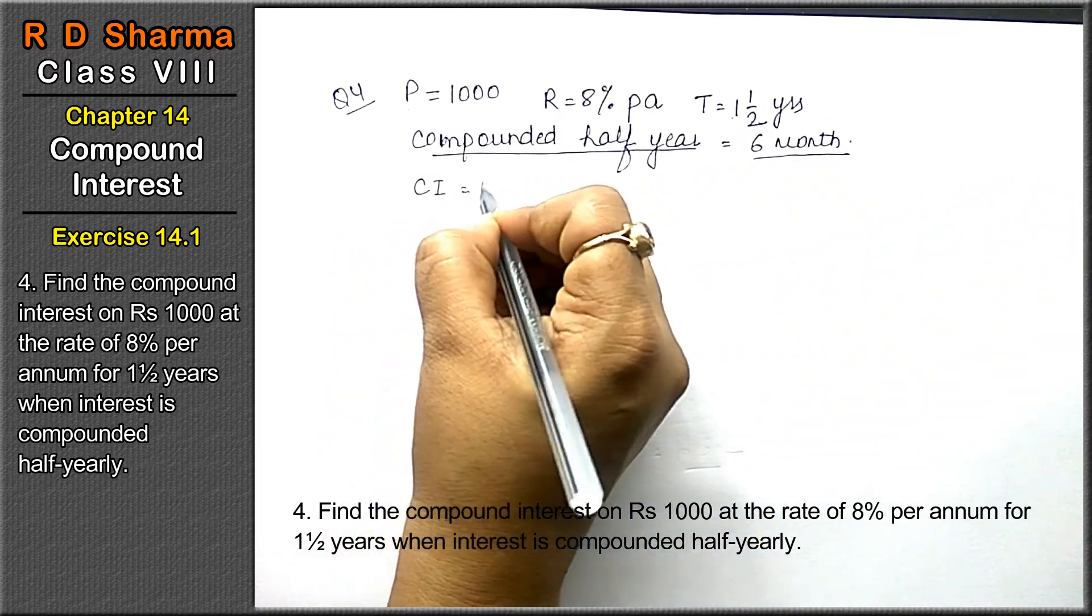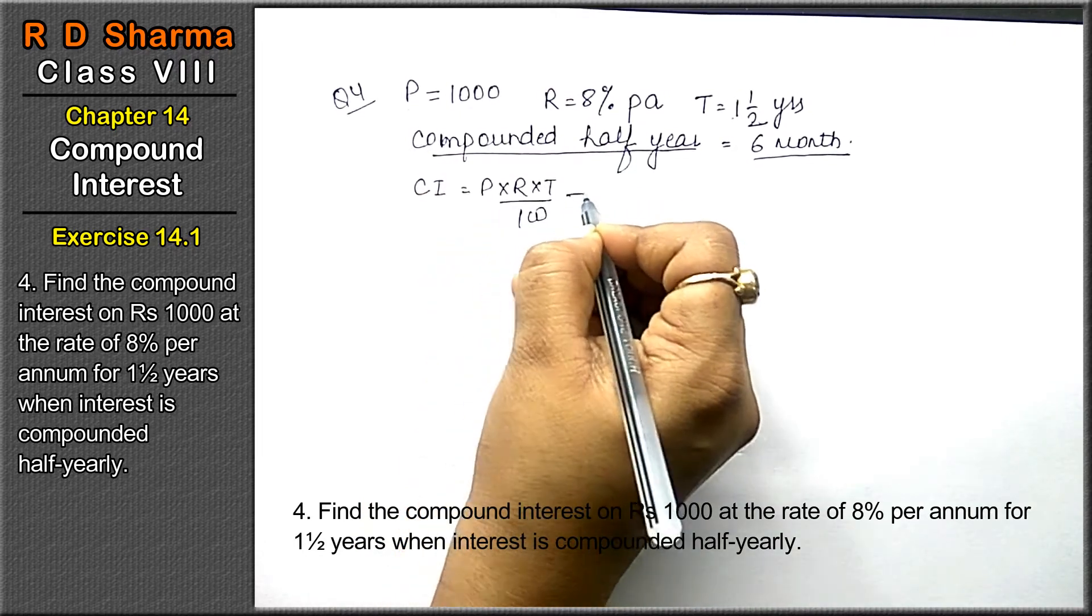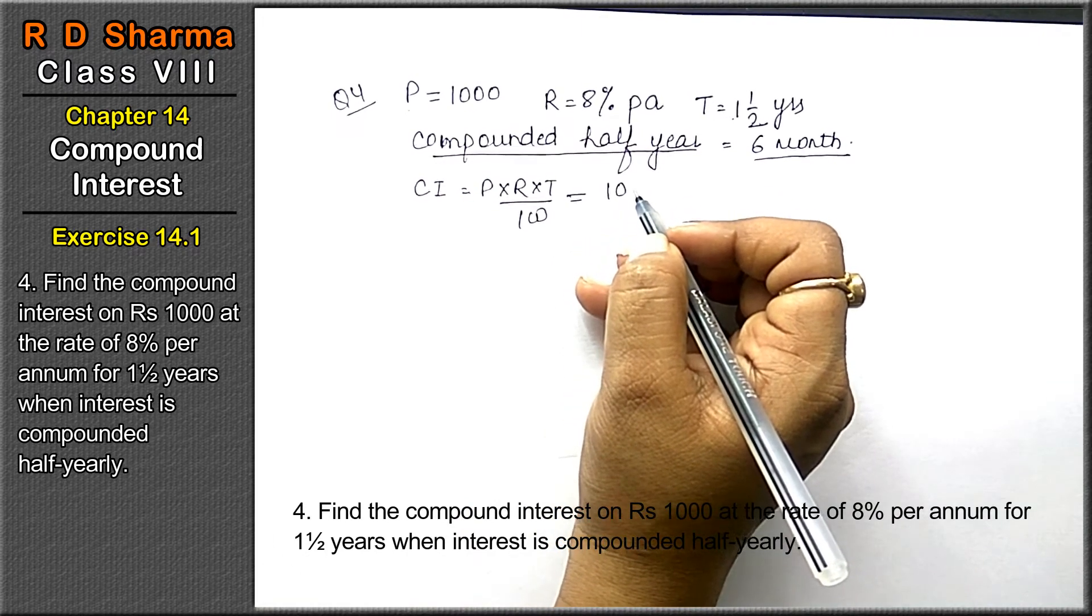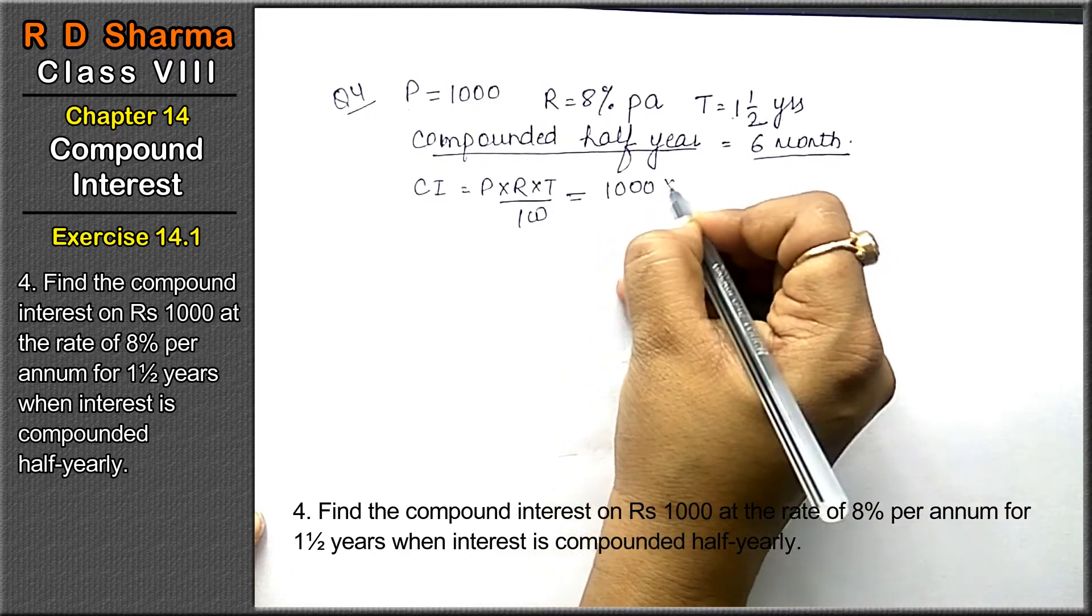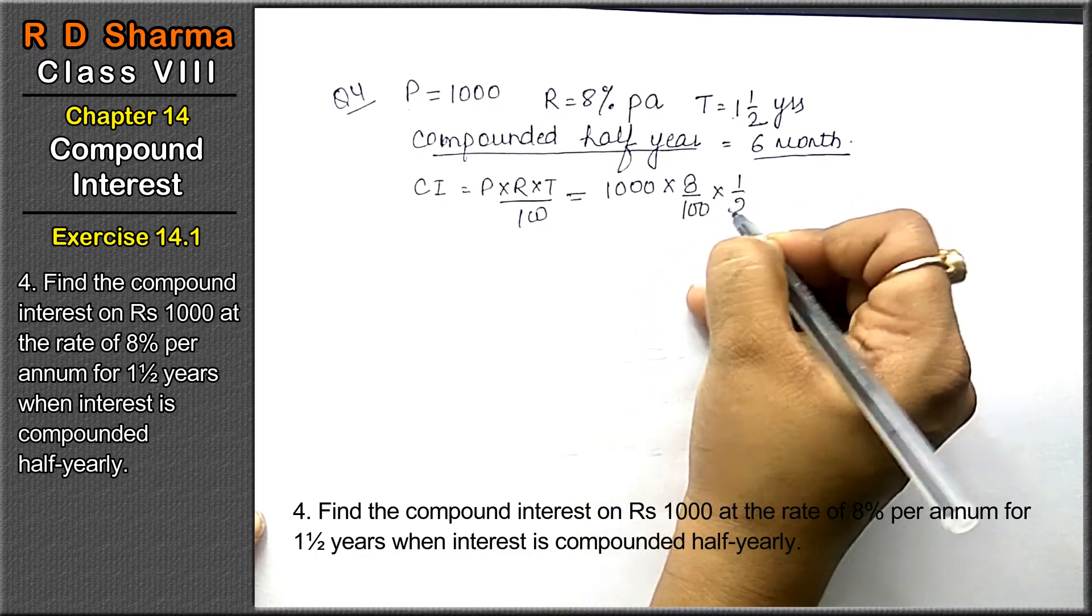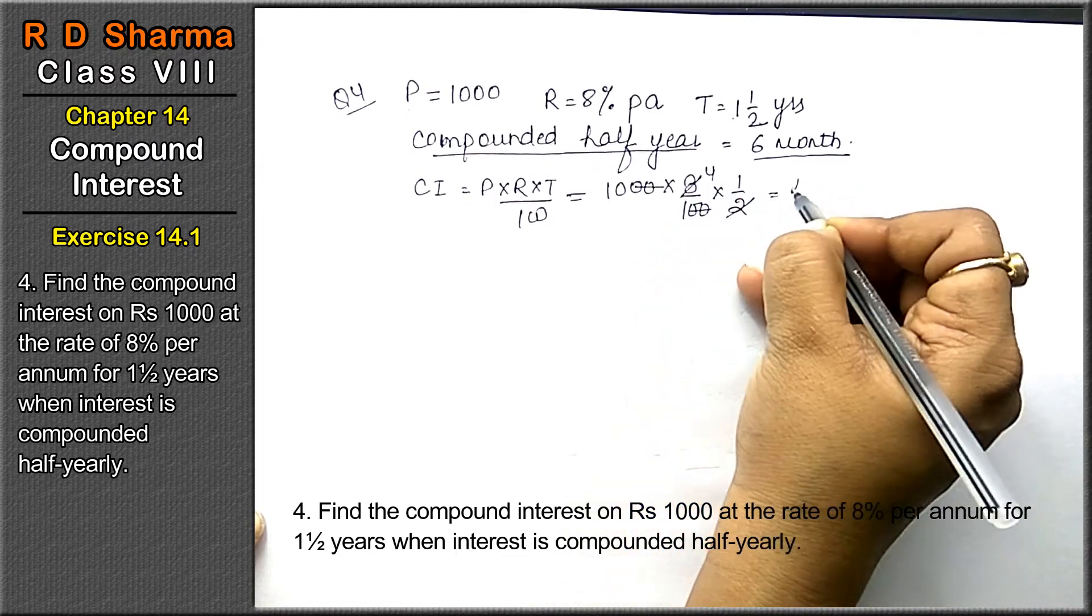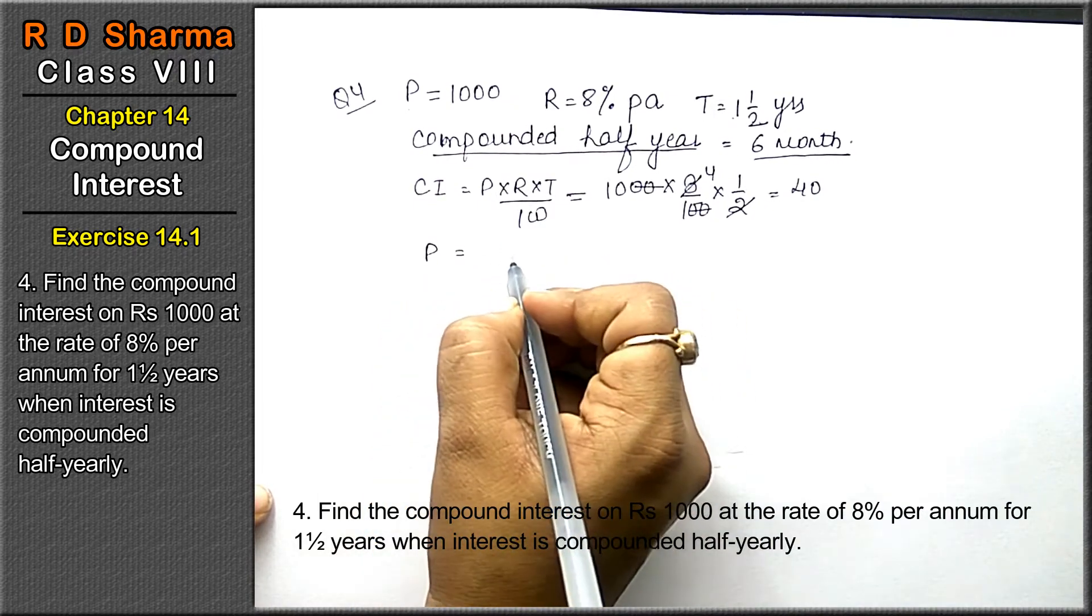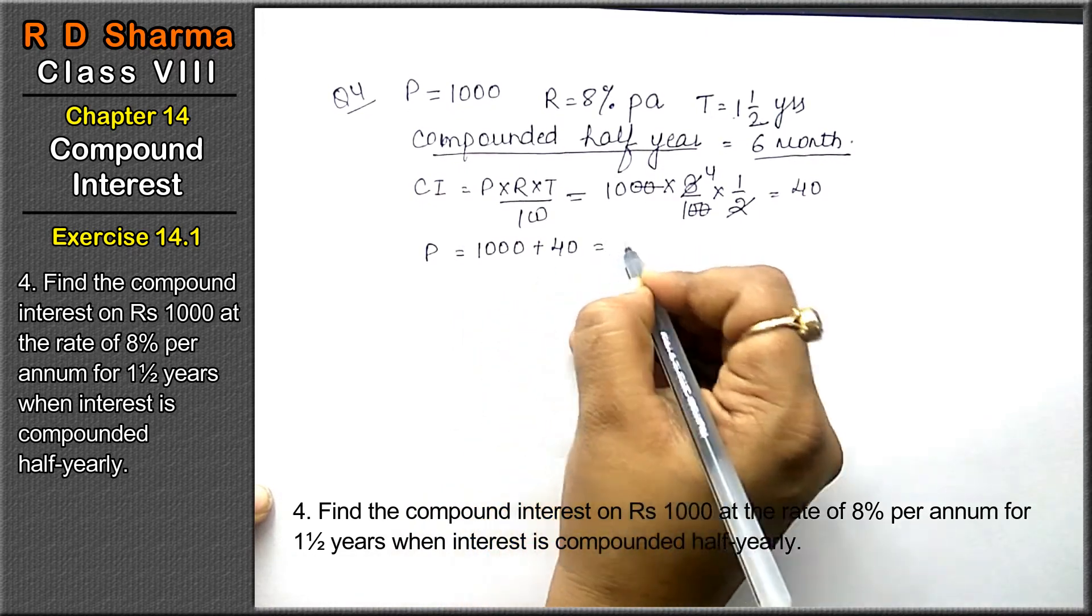Compound interest formula is P into R into T upon 100. P is 1000, R is 8%, and T we'll take as half year. Calculating: 1000 into 8 into 1/2 divided by 100 equals 40. The principle for next half year is 1000 plus 40, that means 1040 rupees.